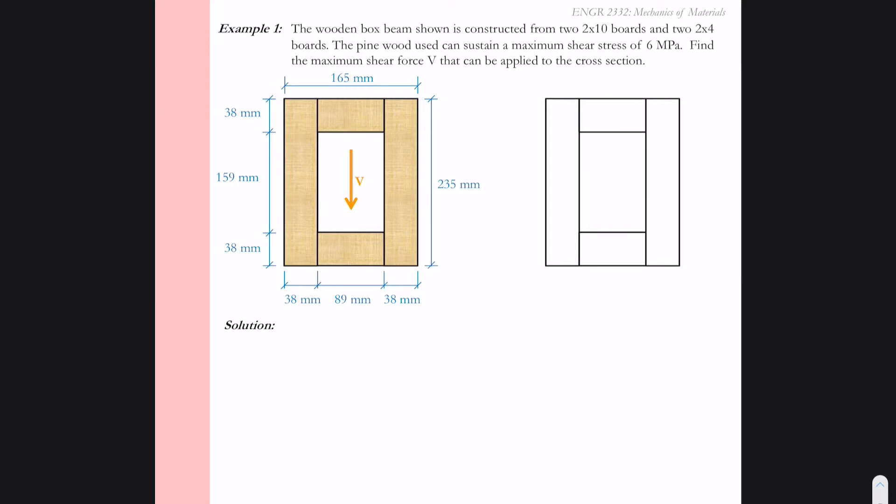It's going to be pine wood and we'll take the maximum shear stress of that pine wood to be 6 megapascals. We're asked to find the maximum force V that can be applied to the cross-section.